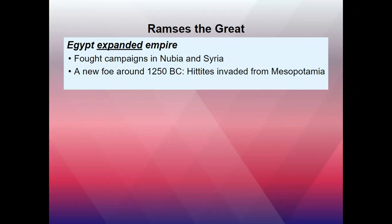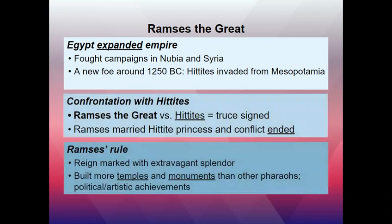The next important figure is Ramses the Great, who expanded the empire further — some people call him Rameses, either is correct. He went into Syria, heading more into the Middle East, and started fighting with the Hittites. Eventually they signed a truce and he married a Hittite princess, which completely ended the conflict through family bonds. Ramses loved spending money and showing his wealth — he built many temples and monuments all for himself to show his greatness, spending more than any other pharaoh ever had.